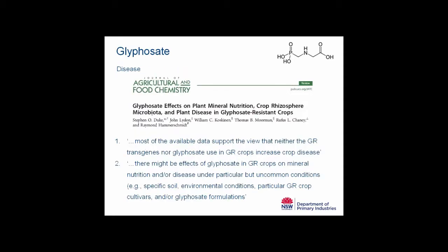Moving on to the impact of glyphosate on disease, a recent review summarised much of the data on the impacts of glyphosate on pathogens and plant disease. The authors conclude that most available data supports the view that neither glyphosate resistant transgenes nor glyphosate use in glyphosate resistant crops increases crop disease. However, they also point out there may be effects of glyphosate in transgenic crops related to mineral nutrition and disease under particular but uncommon conditions — specific soil and environmental conditions, particular crops or glyphosate formulations.